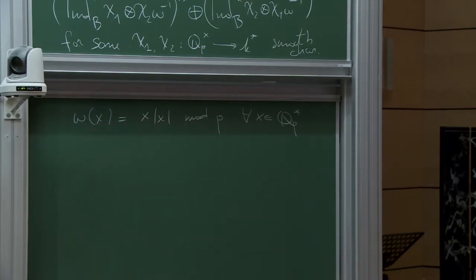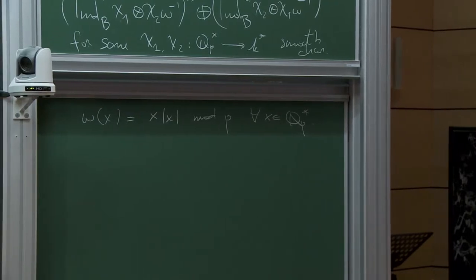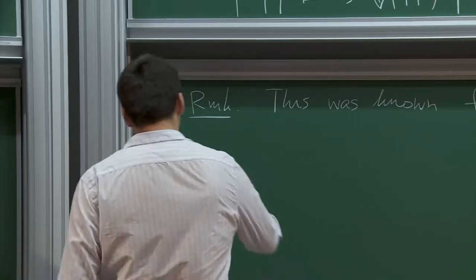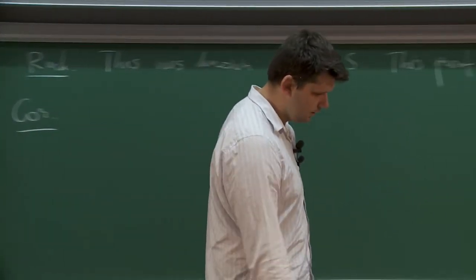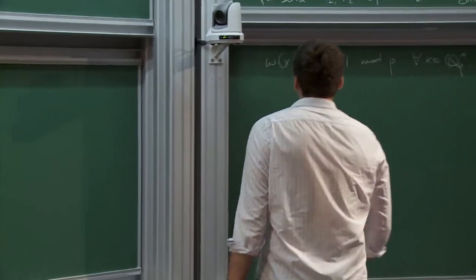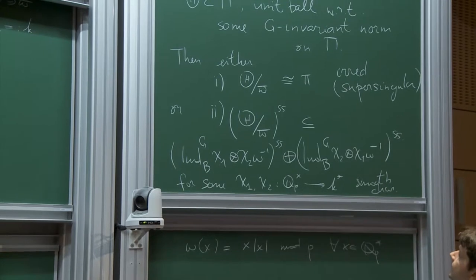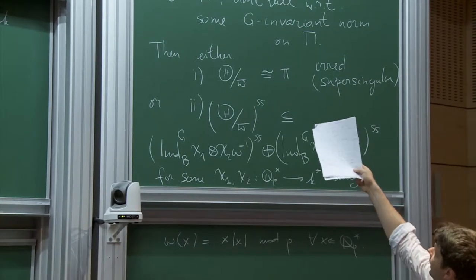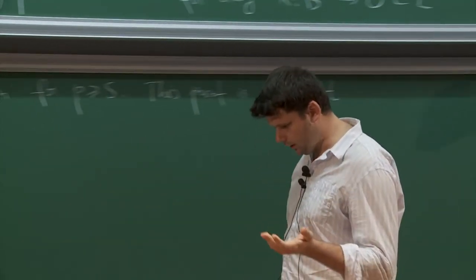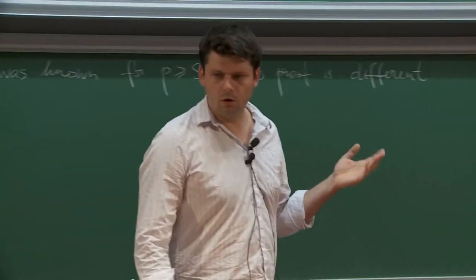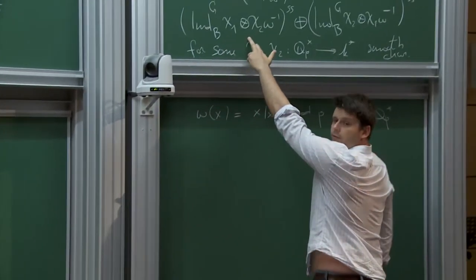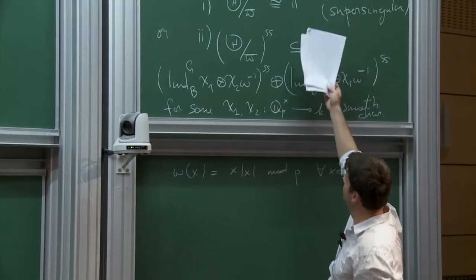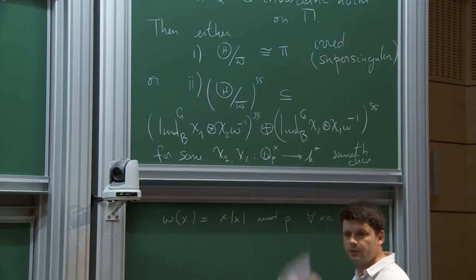Before doing this, let me also mention how this relates to the next talk. When I apply the functor V to π, it is essentially the same as applying this functor to Θ and then inverting p. Now V(Θ) is some O-module of actually finite rank, and you can read off the rank by applying V to the reduction of Θ modulo the uniformizer. Because you know this explicitly, and you know what V(π) and V of these principal series things are, you can conclude the following.